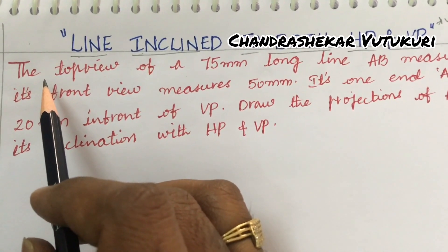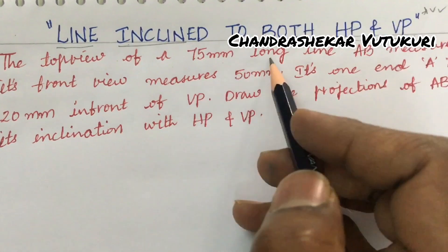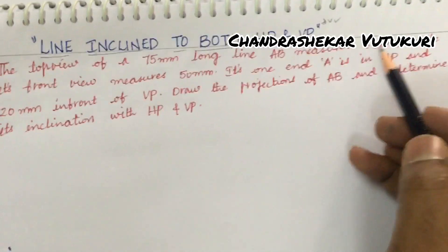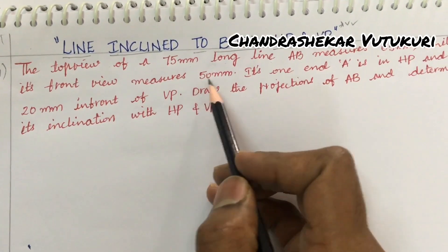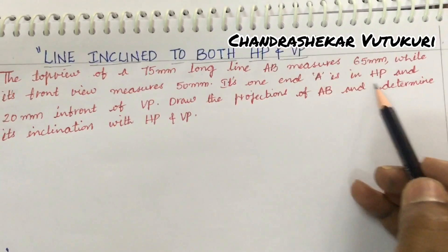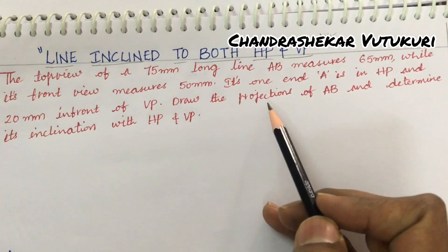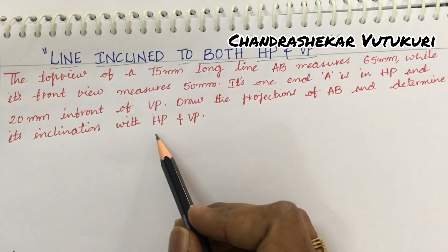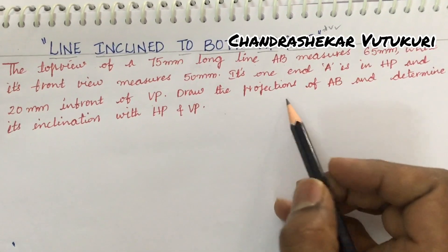Please kindly concentrate on the question. The top view of a 75 mm long line AB measures 65 mm, while its front view measures 50 mm. Its one end A is in HP and 20 mm in front of VP. Draw the projections of AB and determine its inclination with HP and VP.